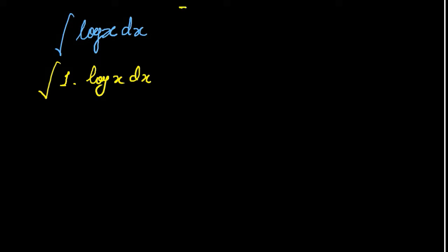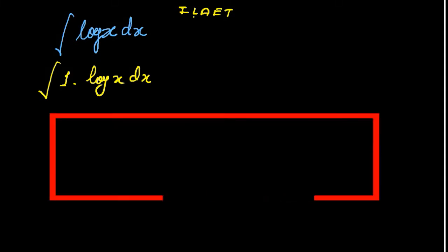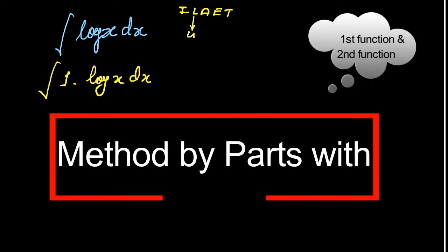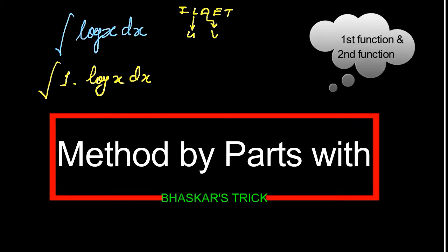So if we remember ILAET, we can easily solve it by the help of integration by parts. Here log is in the first place, so it will be your u. And algebraic, that is 1 here, this one is in the second, so it will be your v.